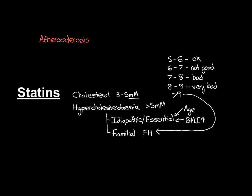Atherosclerosis is a disease process that affects the arteries of the body. If I draw an artery here — this is a cross-section of an artery — this is the lumen of the artery and this is the wall of the artery. This represents a normal, healthy wall. However, what can happen over years and years is atherosclerosis, where cholesterol deposits within the wall of the artery. This is an atherosclerotic plaque — a cholesterol deposit within the wall. So this artery is no longer healthy; it's affected by atherosclerosis.